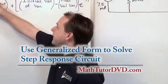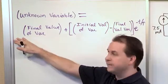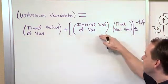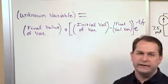We're going to do it using the generalized form. The unknown variable, whatever it is you care about, you calculate the final value as t goes to infinity plus the initial value right after the switch closes minus the final value, and then you have e to the minus t over tau.